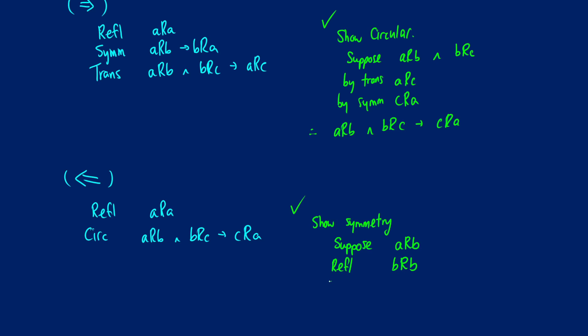And now we know by circularity, if we have aRb, and we have bRb, we can take the shortcut from the right side to the left. And out of it, we can get bRa.